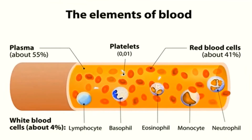We can see blood in red color, but 55% of it is in liquid form — it is called plasma, and it is in yellow color. The other 45% contains corpuscles in solid form, like red blood cells and white blood cells.